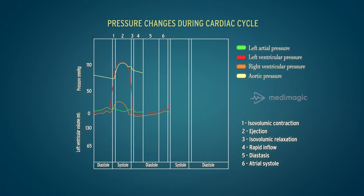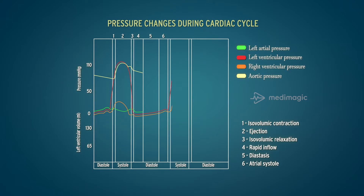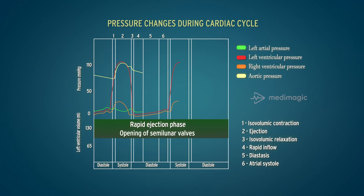During ventricular systole, the intraventricular pressure rises as the ventricles contract. There is no change in the volume of blood in the ventricles — this is the isovolumetric ventricular contraction. As the pressure in the ventricles increases, reaching a maximum of 120 mmHg in the left ventricle and a maximum of 25 mmHg in the right ventricle, the rapid ejection phase is reached with the opening of the semilunar valves.